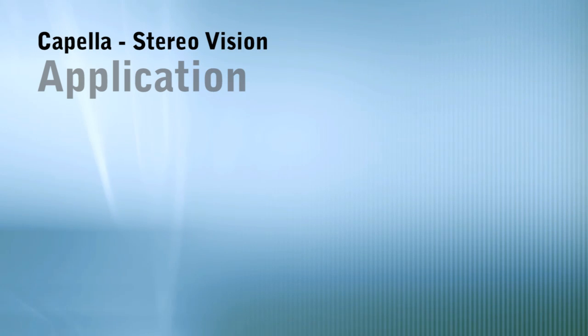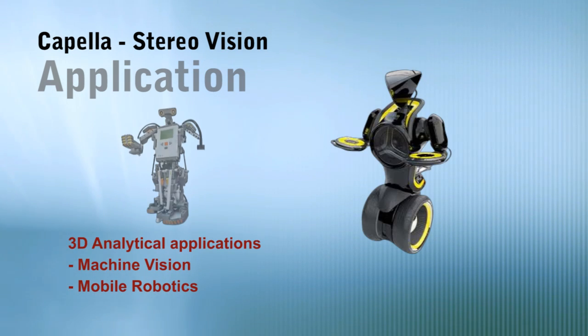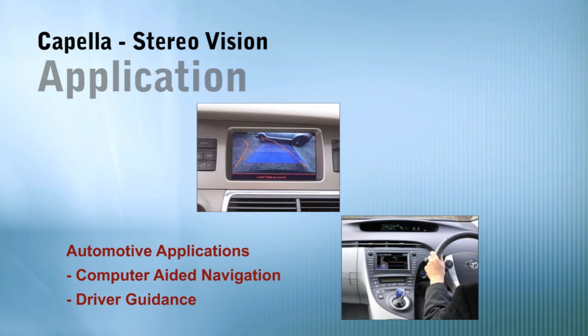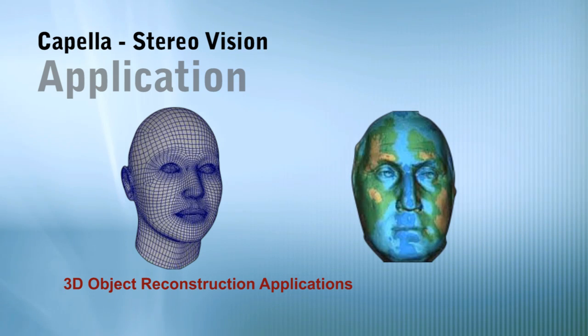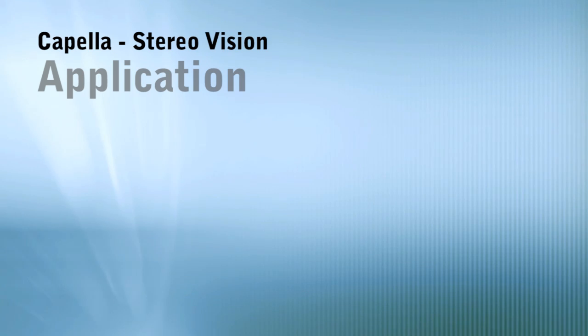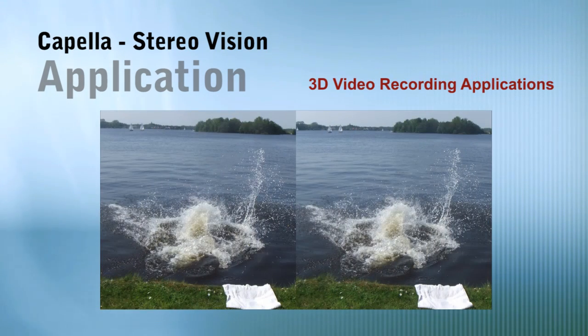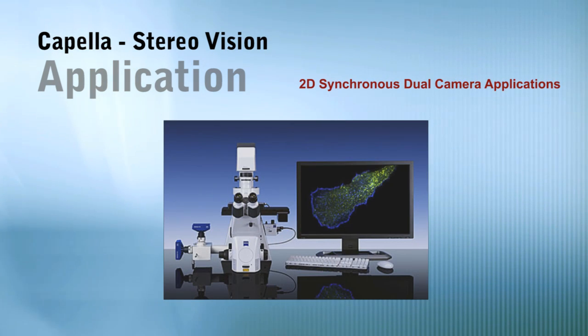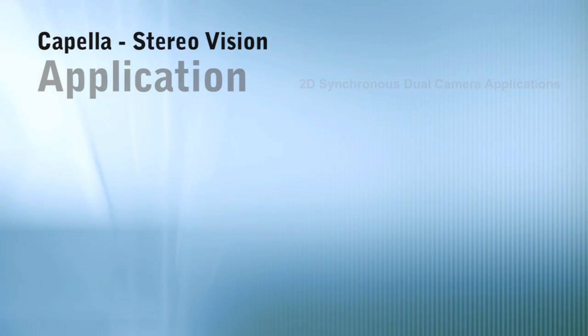Customers using Capella can use it for: A) 3D analytical applications such as machine-to-machine and mobile robotics; B) Automotive applications like computer-aided navigation and driver guidance; C) 3D object reconstruction applications such as reconstructing 3D details of sculptures, monuments, and human faces; D) Stereo 3D video recording and playback; E) 2D synchronous dual camera applications where two simultaneously captured images of the same or different objects are required.